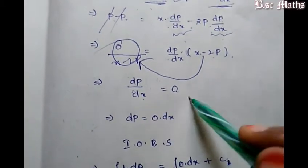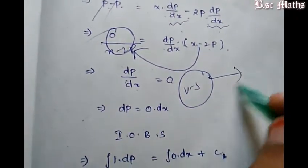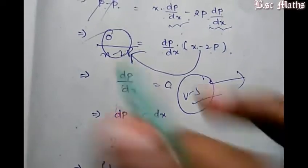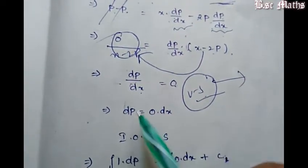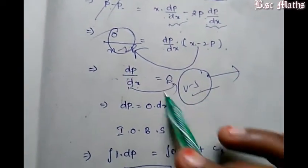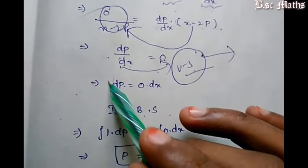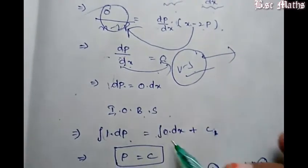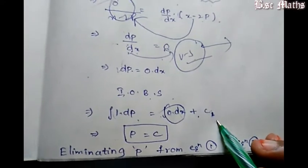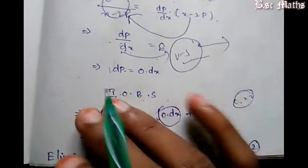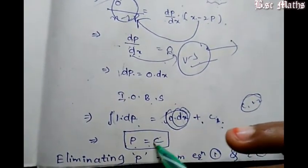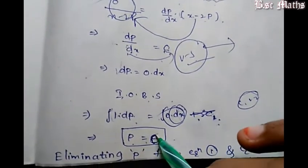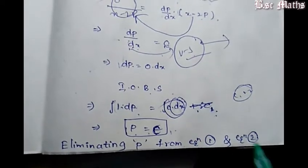So I will show you the variable separable method: dp equals 0 into dx. Taking the integral: integral 1 into dp equals 0 into dx. We substitute k equal to c, so the constant is c. Integrating both sides gives p equals c.